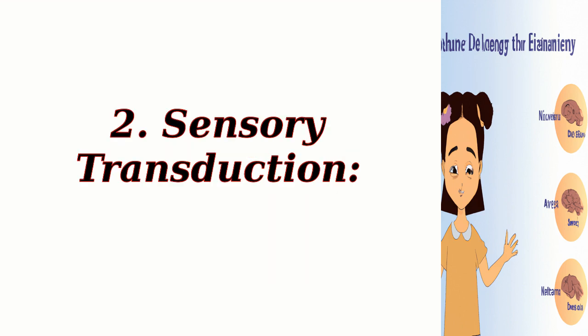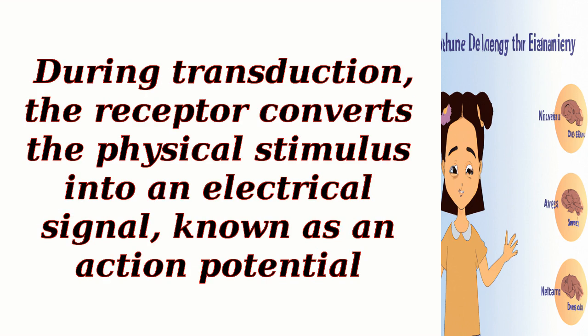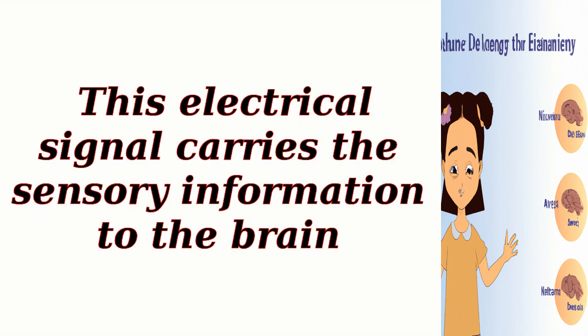2. Sensory Transduction. When a sensory receptor is stimulated by a specific sensory input, it undergoes a process called sensory transduction. During transduction, the receptor converts the physical stimulus into an electrical signal known as an action potential. This electrical signal carries the sensory information to the brain.